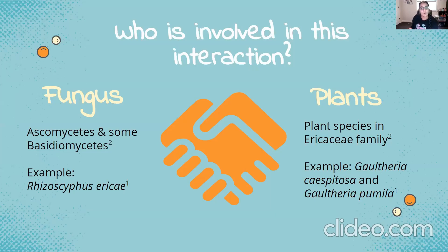As mentioned, ericoid mycorrhizal involves a specific symbiotic relationship between a fungus and a plant. The first paper by Perotto and colleagues suggests that ericoid mycorrhizal involves an interaction between ascomycetes and some basidiomycetes fungi and plant species in the Ericaceae family. The second paper by Brezon and colleagues provided a real-life example of this interaction, which is between Rhizoscyphus ericae — an ericoid mycorrhizal fungal species — and Gaultheria caespitosa and Gaultheria pumila, which are plant species from the Ericaceae family.